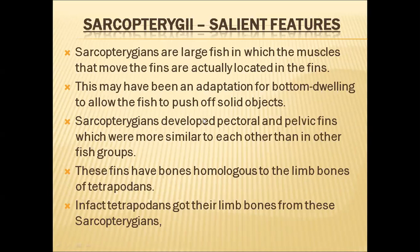Sarcopterygii also developed pectoral and pelvic fins. The pectoral fins are homologous to the forelimbs of tetrapods and pelvic fins are homologous to the hind limbs of tetrapods. These fins have bones homologous to the limbs of tetrapods. In fact, tetrapods got their limb bones from this Sarcopterygii group only.